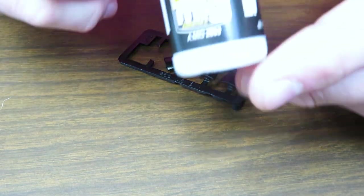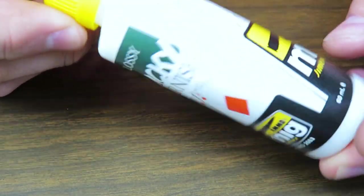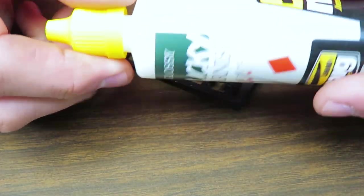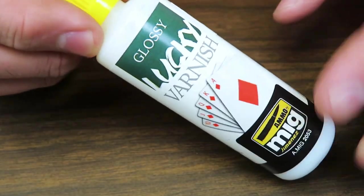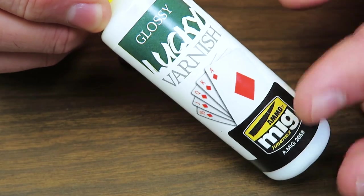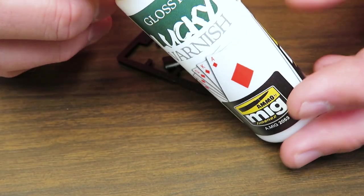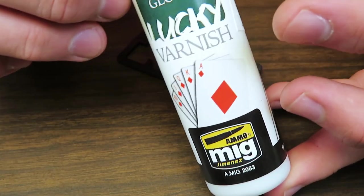You can use any gloss varnish you don't have to use Ammo of MIG. You can use Vallejo, you can use Games Workshop Art Coat. I just like this because it's thin, it's ready to go through an airbrush and when you hand brush it, it levels out a lot easier and doesn't leave brush marks in the gloss as much. This is just my preferred brand, to each their own. I'm not being endorsed by Ammo of MIG for this.